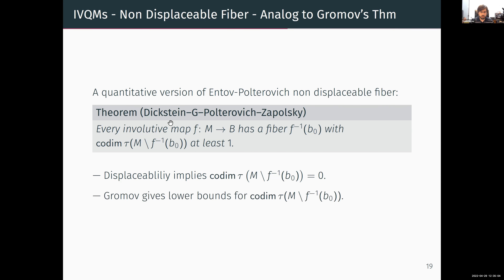Moreover, Gromov gives lower bounds for this co-dimension in terms of invariants constructed from the algebra. So we get a quantitative version of the non-displaceable fiber theorem, where we demonstrate an invariant — the co-dimension of the measure of the complement to the fiber — whose non-vanishing implies non-displaceability, and moreover one can actually measure its dimension.